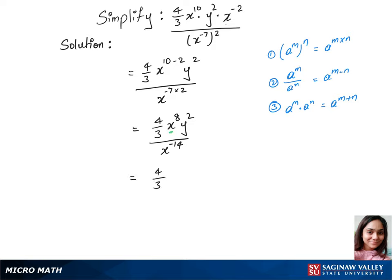on the top and bottom. We can use rule 2 from the list and write this as x power 8 minus negative 14, which is plus 14, y power 2. This gives us 4 over 3, x power 22